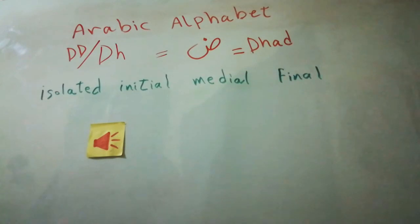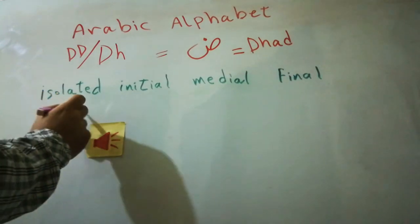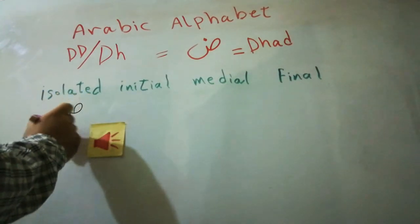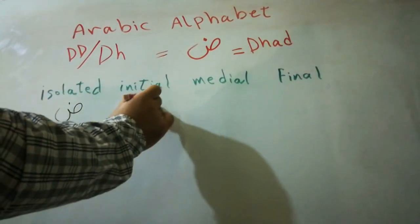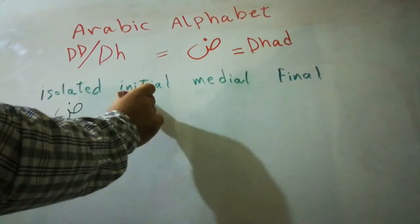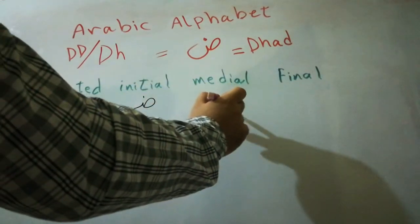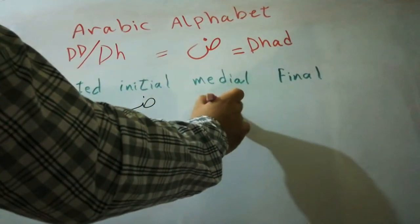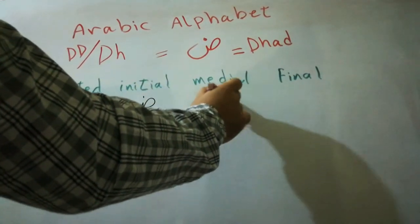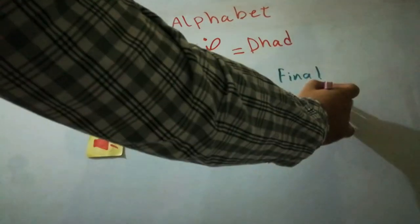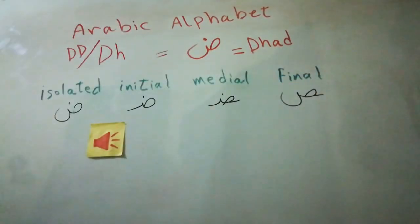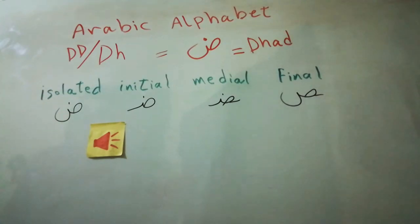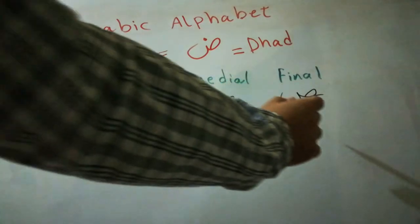Let's go over the forms or the shapes. The isolated one is like that, the initial one is like that, the medial one is like that, and the final one is like that.